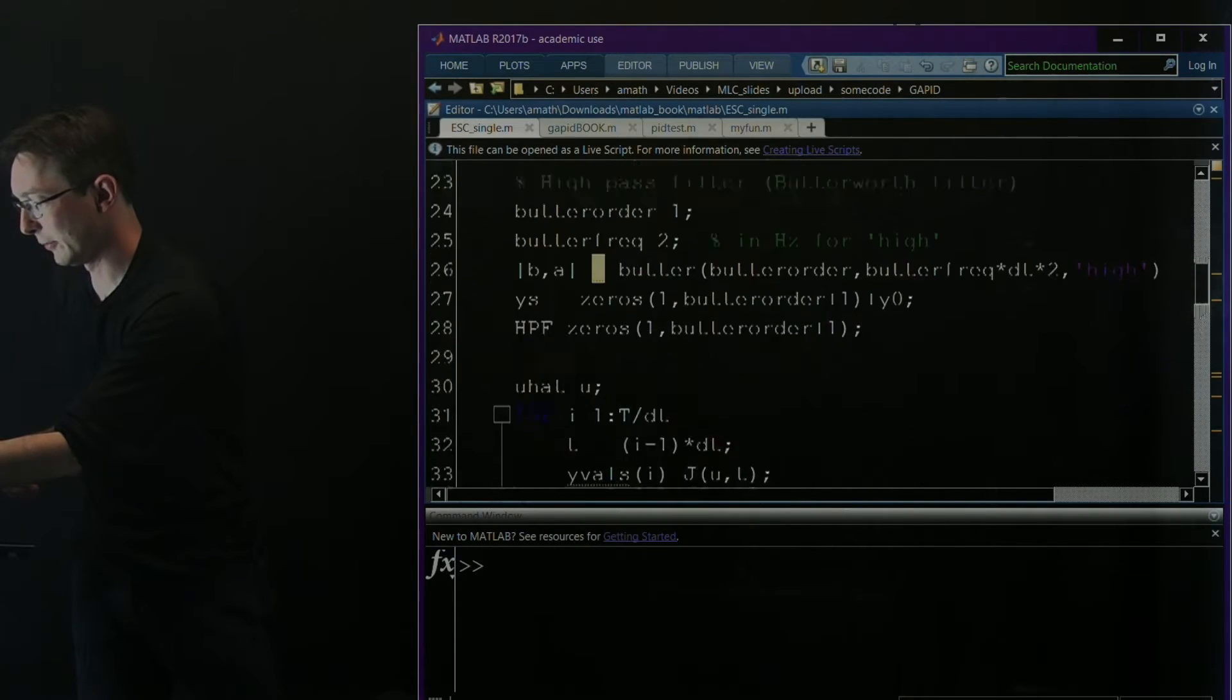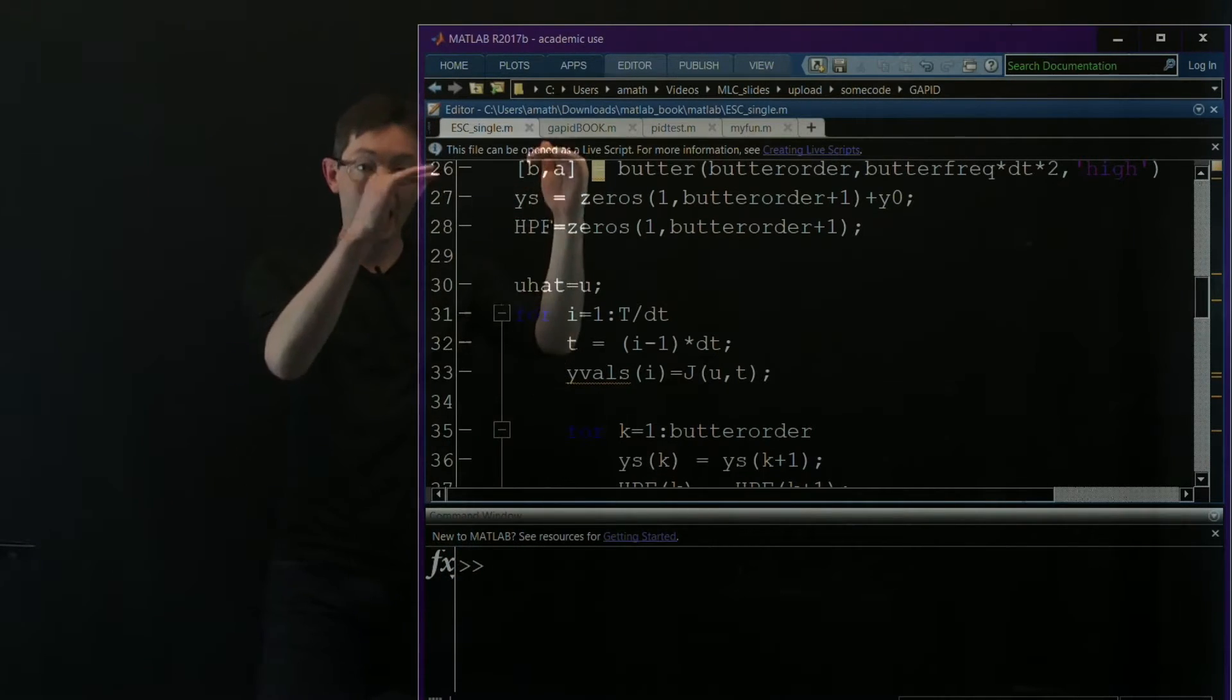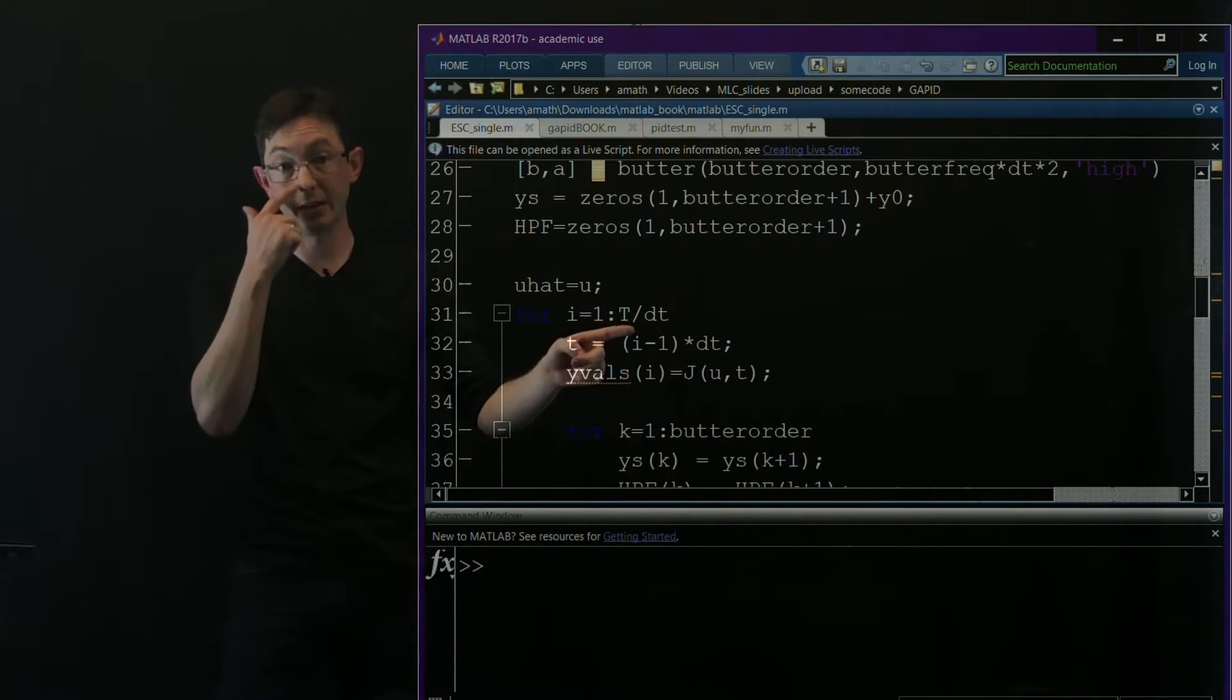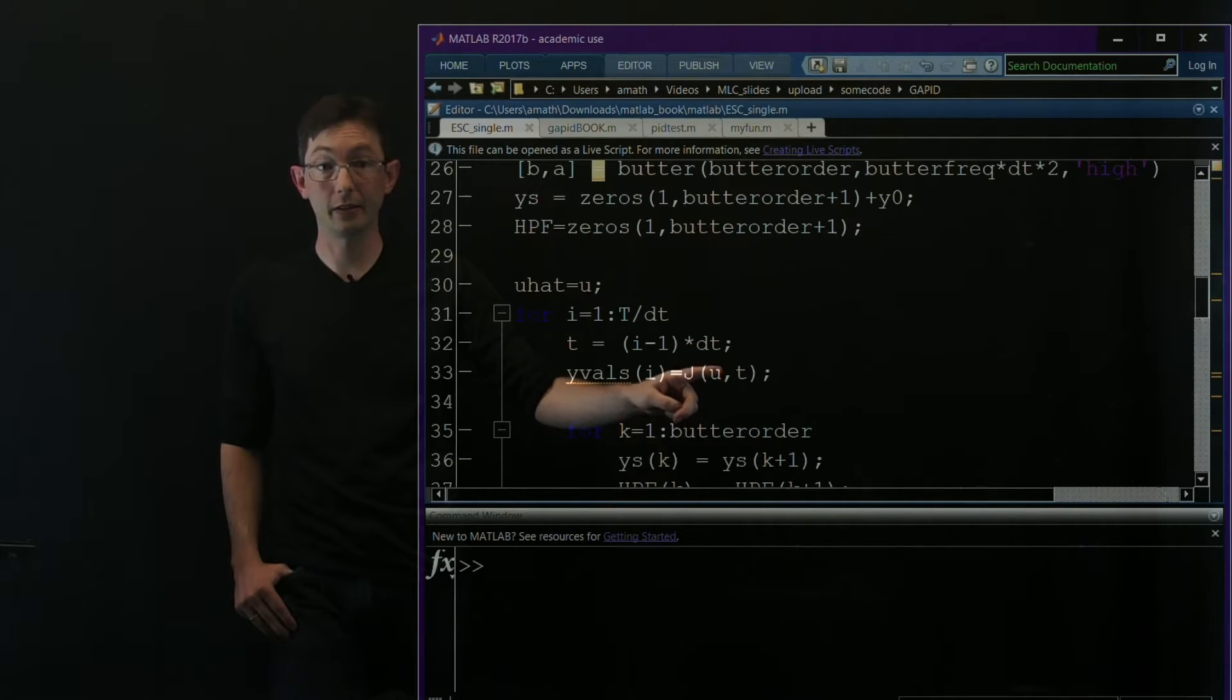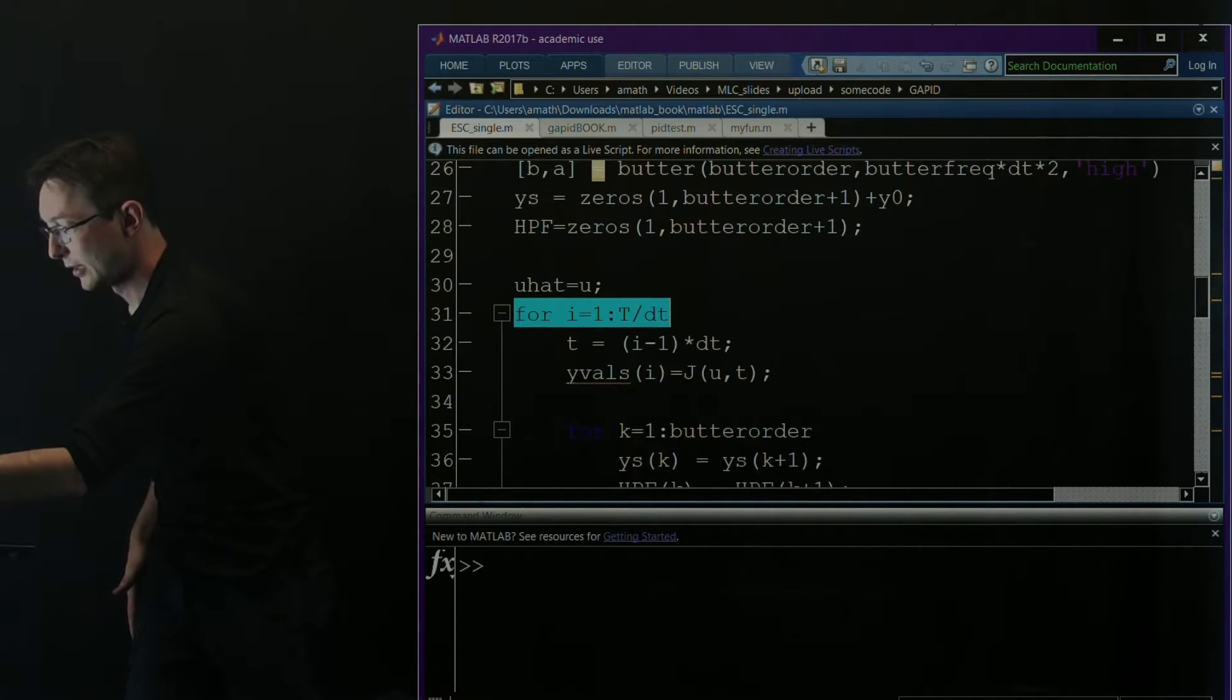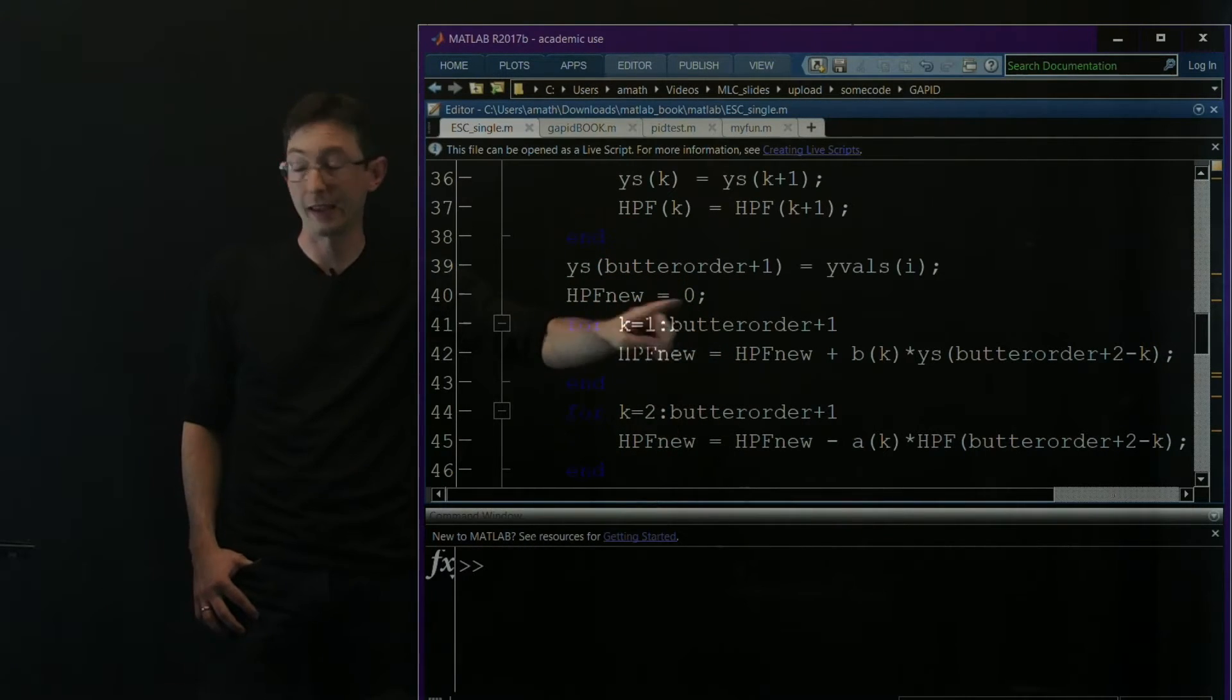In MATLAB you can play with this code or read about the butter in the help files, but basically I'm just designing a discrete time Butterworth filter here. Now I'm going to set up my loop. This loop is basically a big for loop where I'm walking through each delta t of the simulation. So for each i up until the final duration of my simulation, what I'm going to do is I'm going to measure what j is at that particular value of u. And then I'm going to do this sinusoidal jiggle, I'm going to high-pass filter the output, multiply them, and integrate that into my u hat.